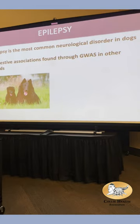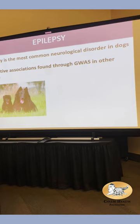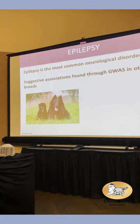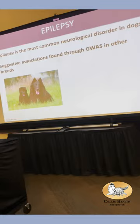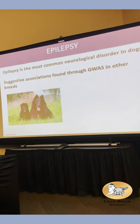Moving on to epilepsy — the most common neurological disorder of dogs, with an estimated incidence across breeds of about 0.75%. There are many reasons for seizures, but many breeds have seizures for no apparent reason — no metabolic imbalance, no abnormal brain structure. We call that idiopathic, just like megaesophagus: we don't know why you have seizures.